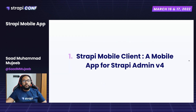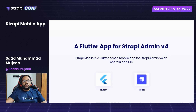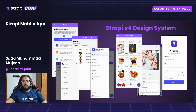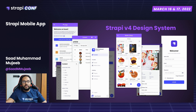The Strapi mobile client is based on Google's Flutter framework, which is made for cross-platform mobile application development. This means a single codebase will run on both Android and iOS platforms. The design system of the mobile client is based on version 4 standards — as you can see in the screenshots, we have the login screen, media libraries, and many more features.